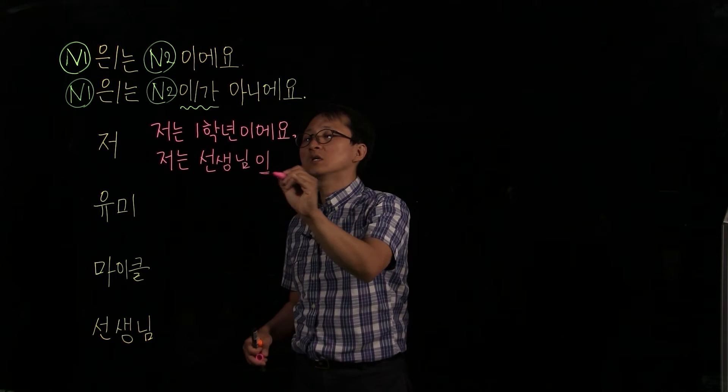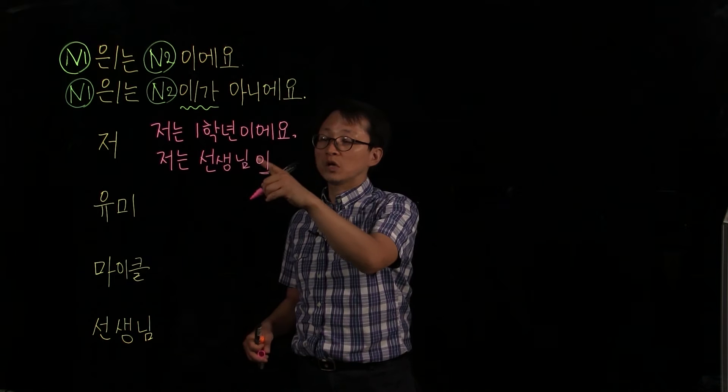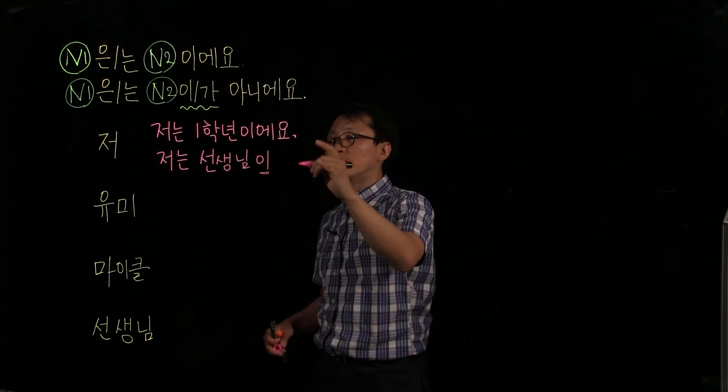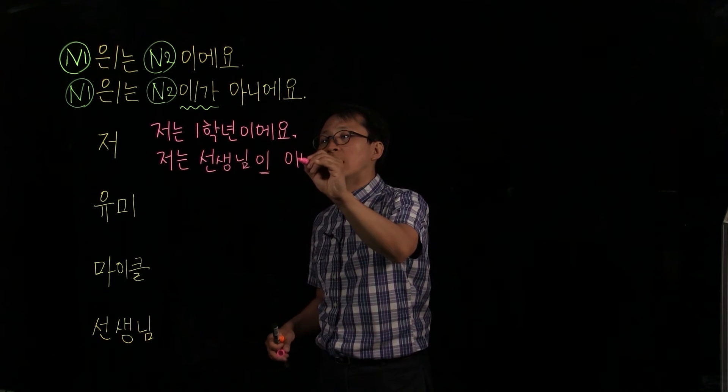So you need 이 because there's a consonant. You choose something without a consonant here, 선생님이. And what's the word? Am not, is not. 아니에요. 아니에요.